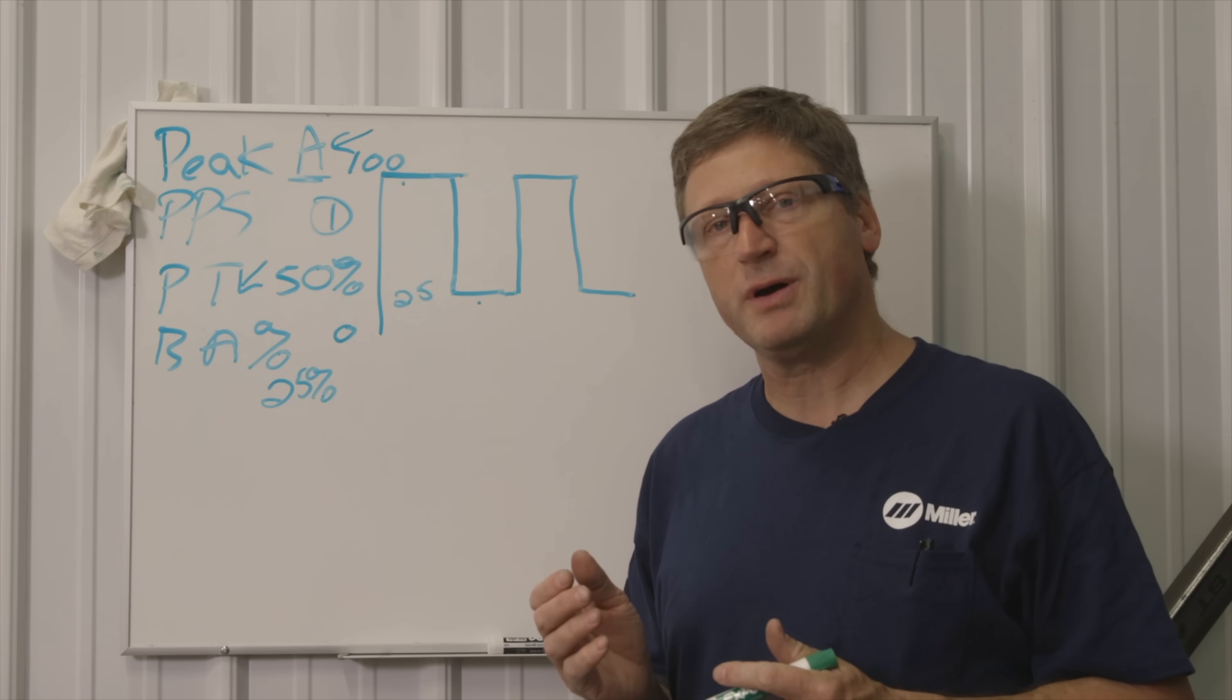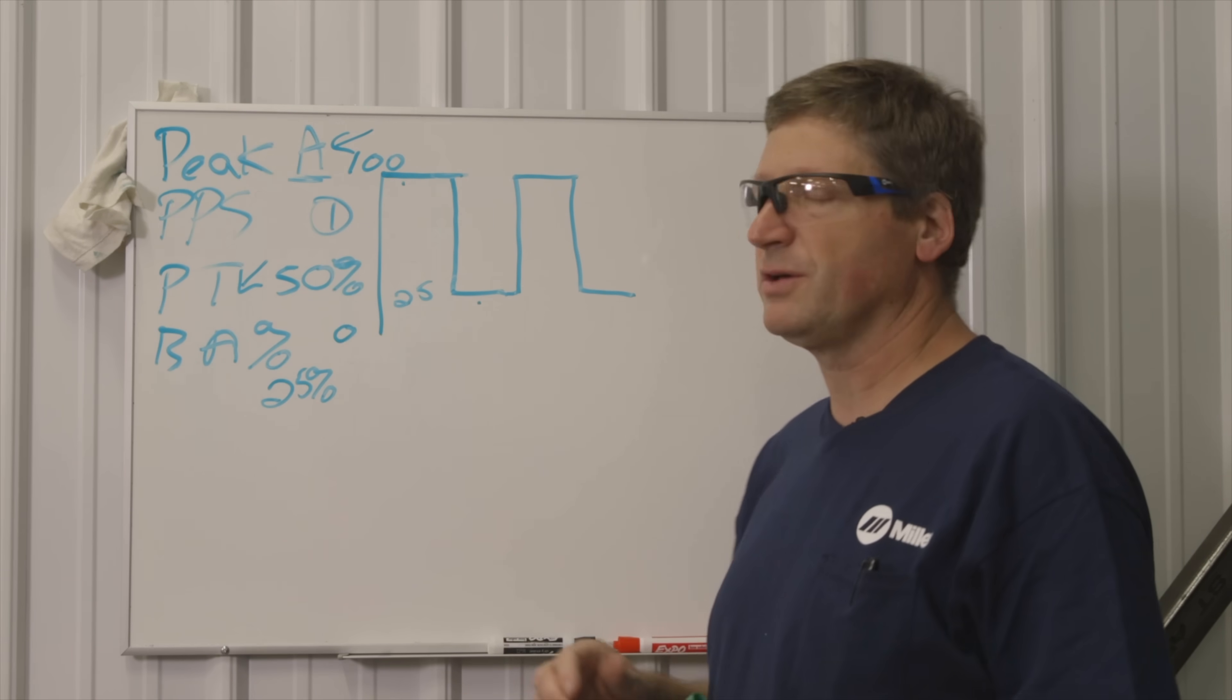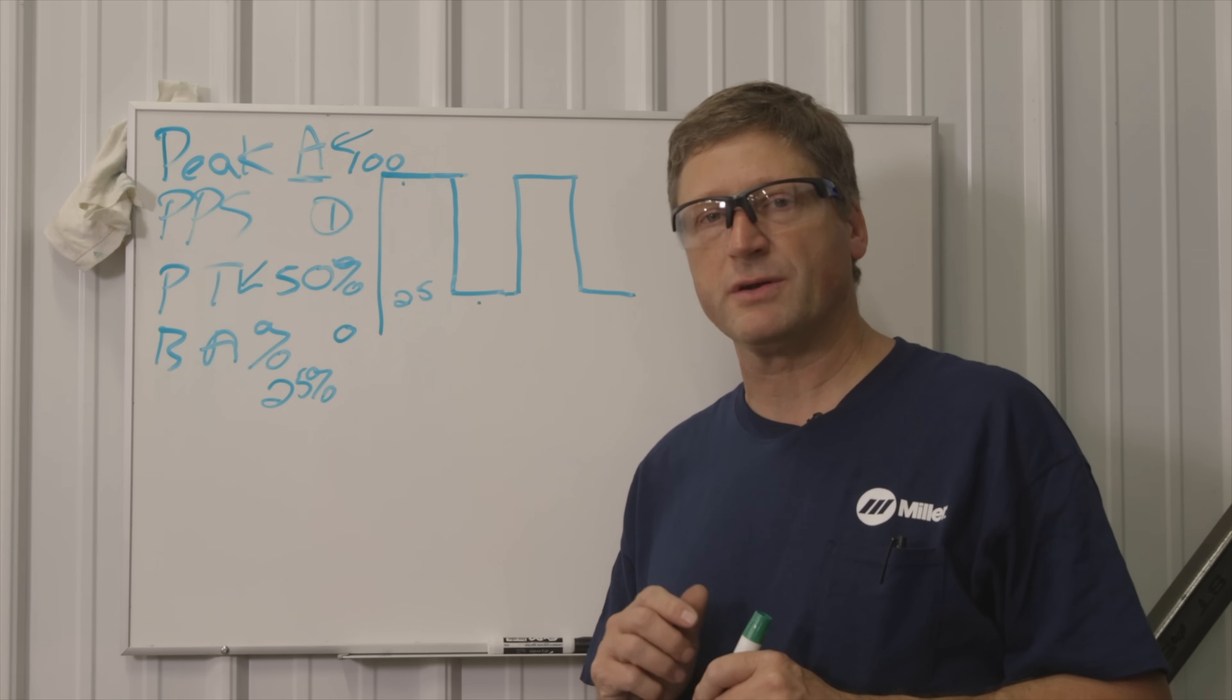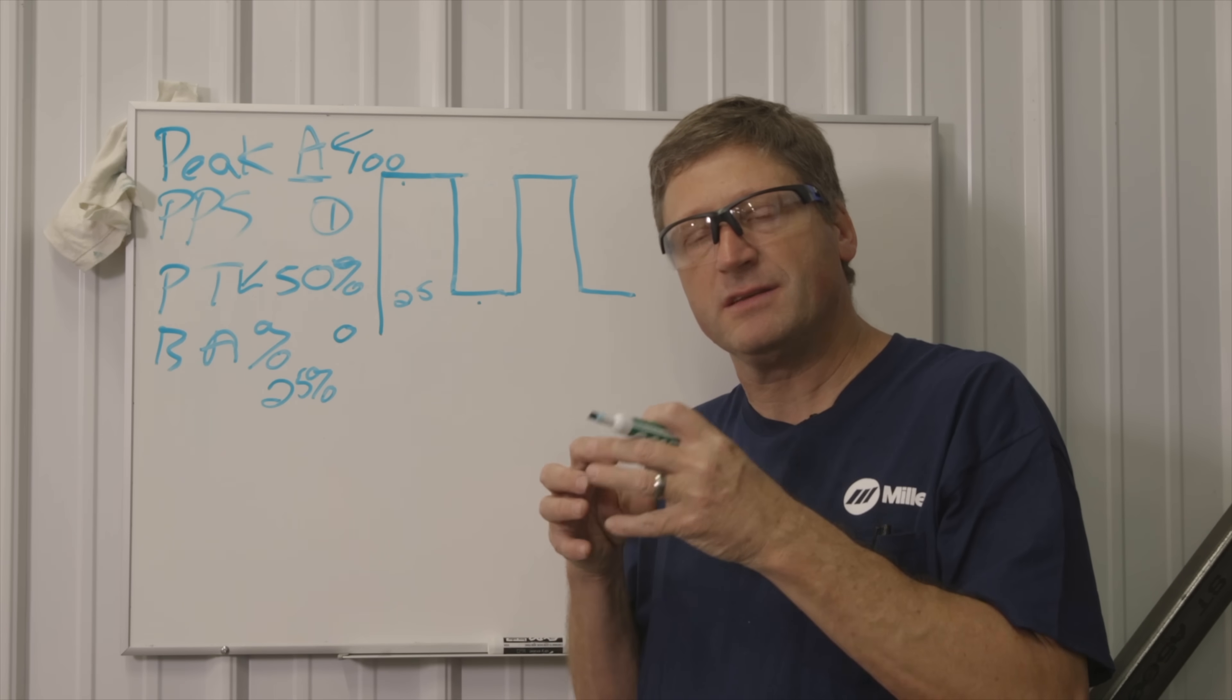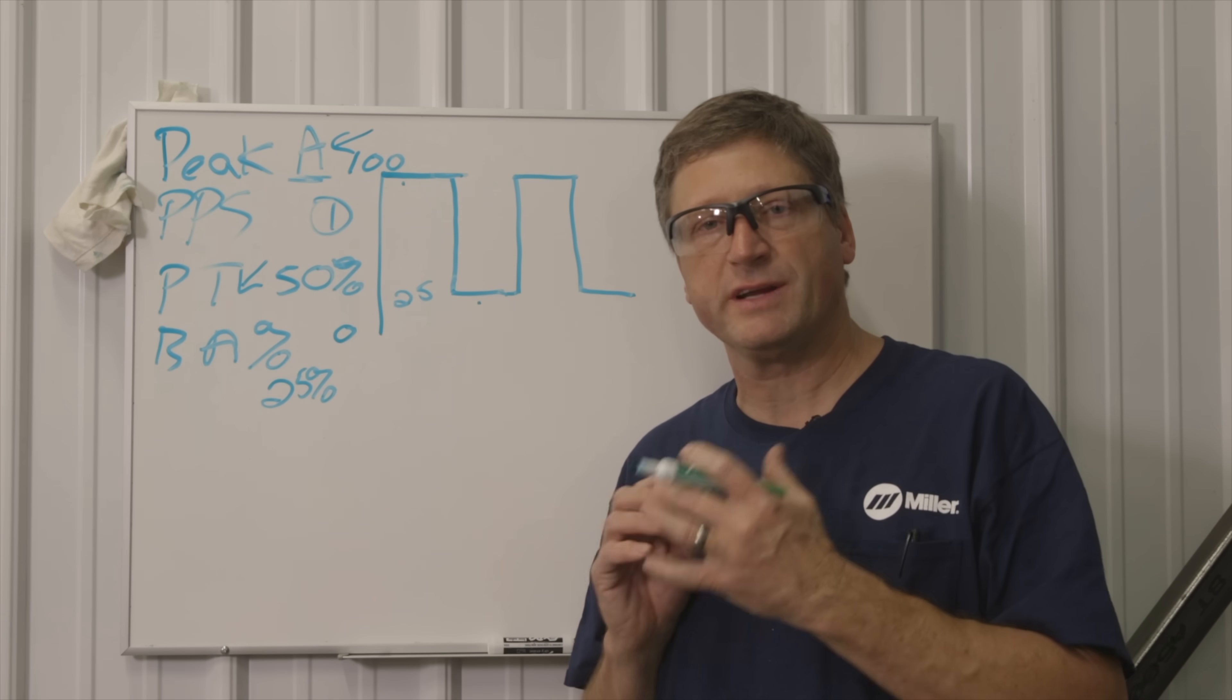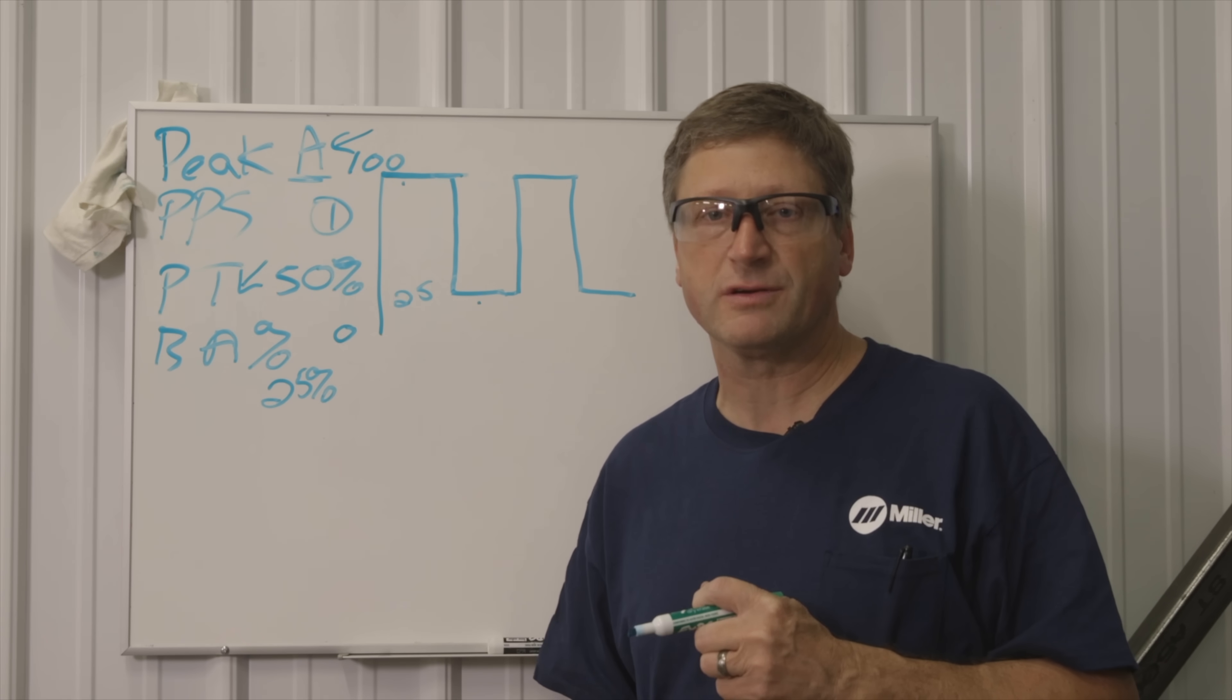There are other ways you can use pulse too. If you go to a higher pulse rate and you turn your pulses per second up into the hundreds, it agitates the weld puddle really fast and helps drive that arc into the piece, gives you more of a focused arc. It also agitates the weld puddle to give you a better grain structure of the weld bead, which is really cool if you're working with dissimilar materials.